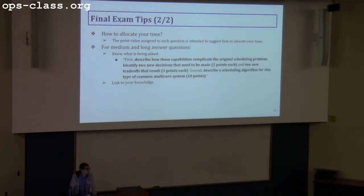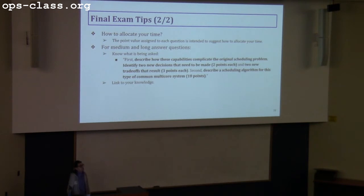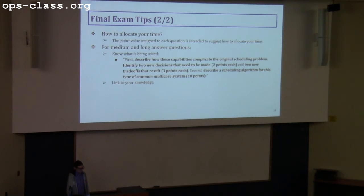How to allocate your time: the points assigned to each question should tell you how much time to spend. A 25-point long answer question means about 25 minutes. For medium and long answer questions, know what is being asked — read the question completely. When grading the midterm, many students didn't read the question carefully. For example, a question asking for kernel privileges for multiplexing memory — many students gave general kernel privileges rather than the specific ones for memory multiplexing.